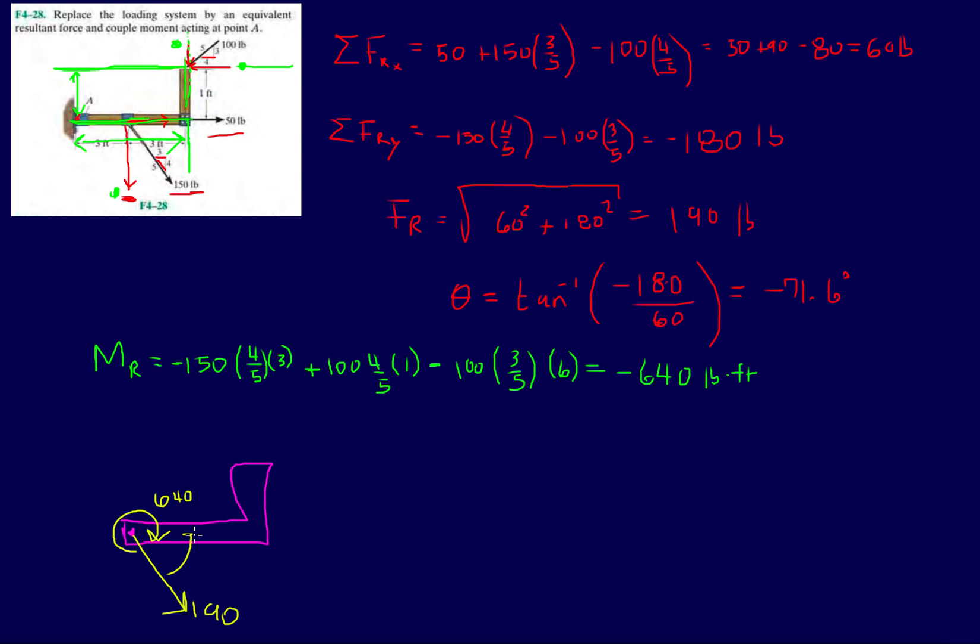And then I have a resultant going like this, 190 pounds, and then the angle will be 71.6 degrees. Like in the previous video, if you want to draw it in a different way, you can draw it up here. This would be the 71 degrees.